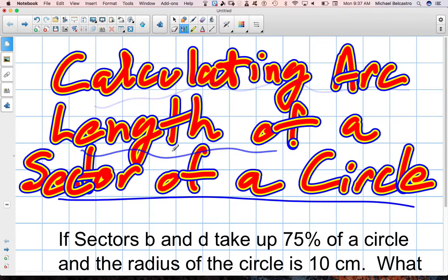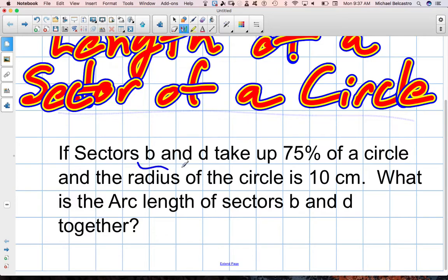It says, if sectors B and D, that's two sectors, take up 75% of a circle, and the radius of the circle is 10 centimeters, what is the arc length of the sectors B and D together?